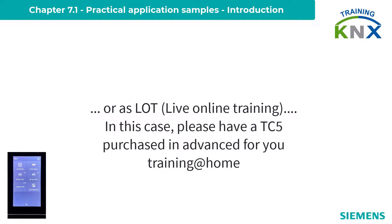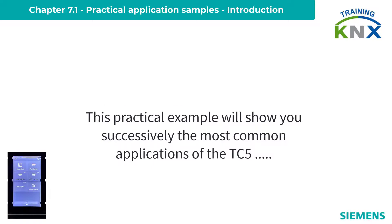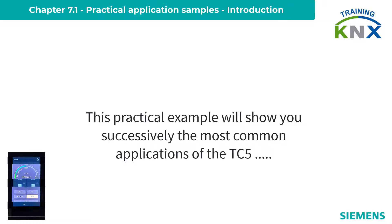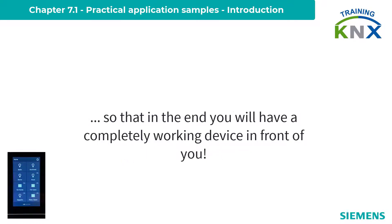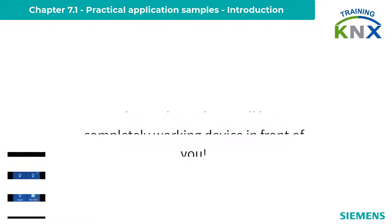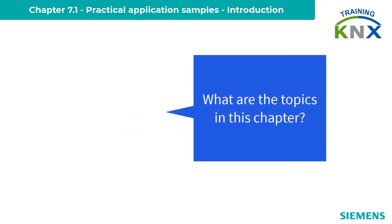The practical application example enables you to successively realize the most common application options on the TC5. This is done in ascending order so that at the end you have a completely working device with all applications in front of you. Now to the structure of this chapter — in the video description you will find the corresponding links to all parts mentioned here.